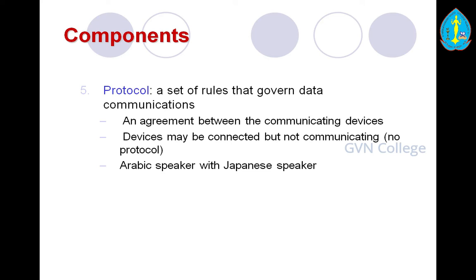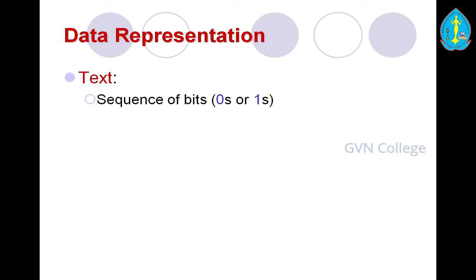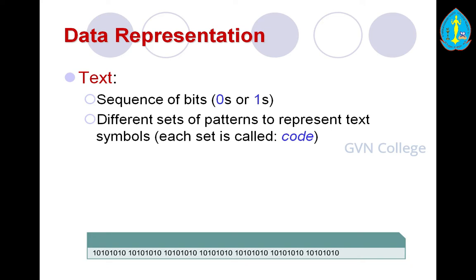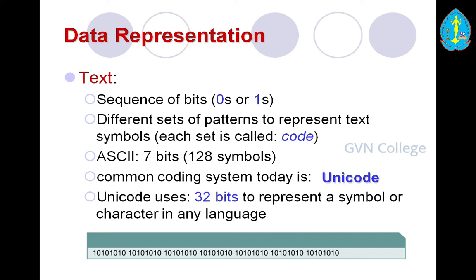Data representation refers to data in the form of text, numbers, images, audio, and video. Text is represented as a sequence of bits — zeros and ones. Different sets of patterns represent text symbols; each set is called a code. ASCII code is used for text — 7 bits of ASCII codes, representing 128 basic symbols. The common coding system today is the Unicode system, which uses 32 bits to represent a symbol or character in any language, with its range shown here.